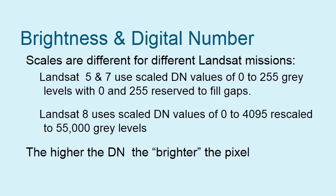Brightness numbers are also different across Landsat missions. Landsat 5 and 7 use digital numbers from 0 to 255, with 0 and 255 reserved to fill gaps. Landsat 8 uses digital numbers valued between 0 and 4,095, which are even rescaled to 55,000 grey levels. Remember: the brighter the pixel, the higher the digital number.